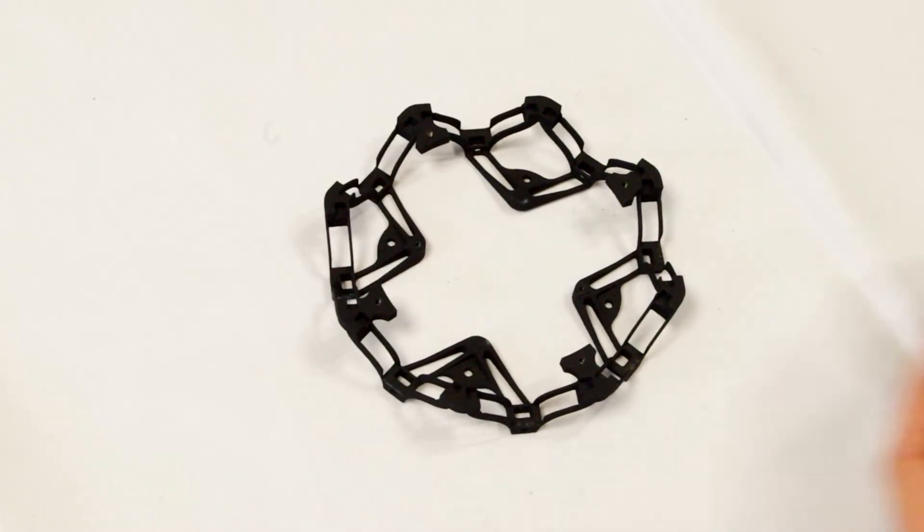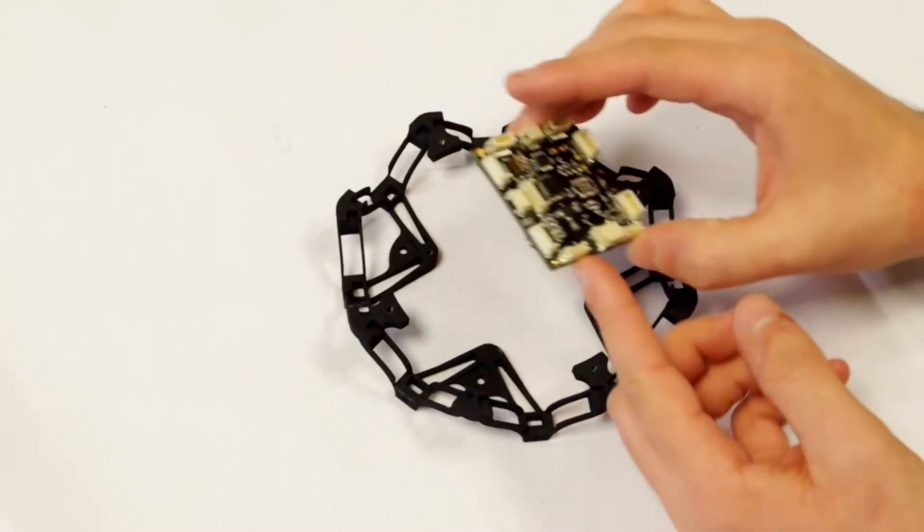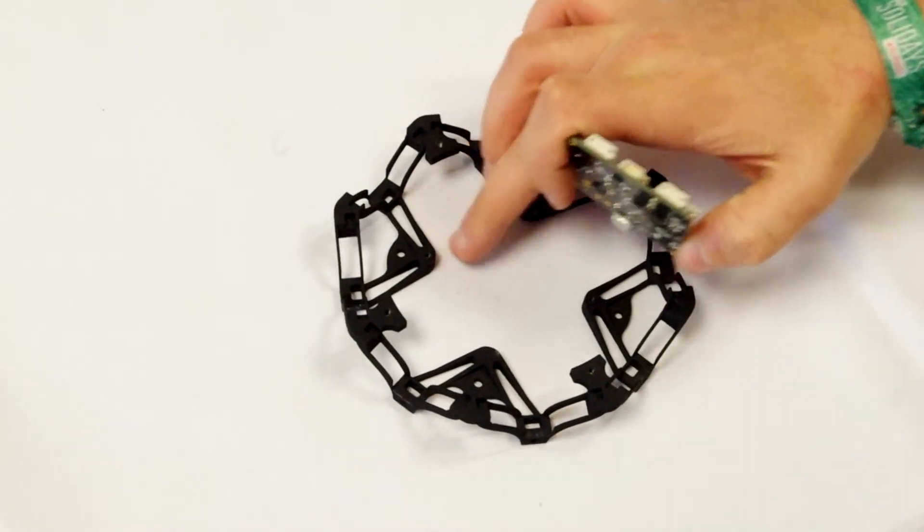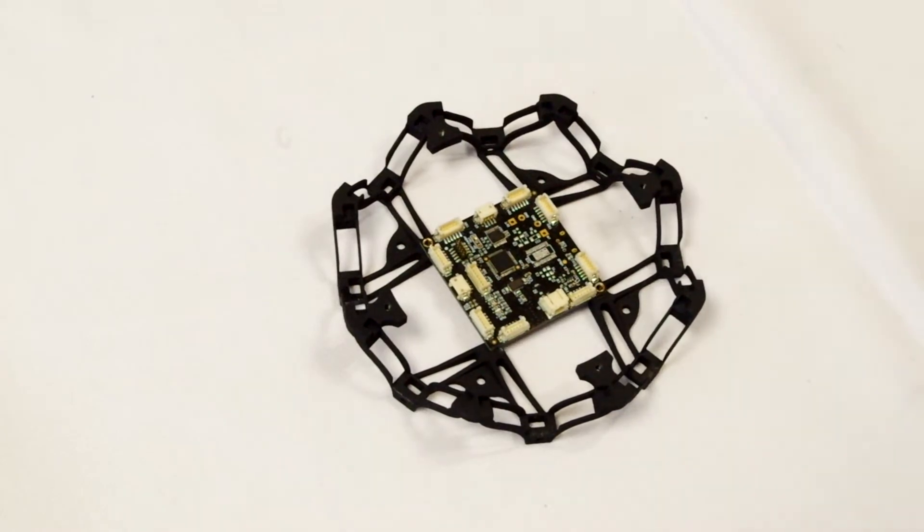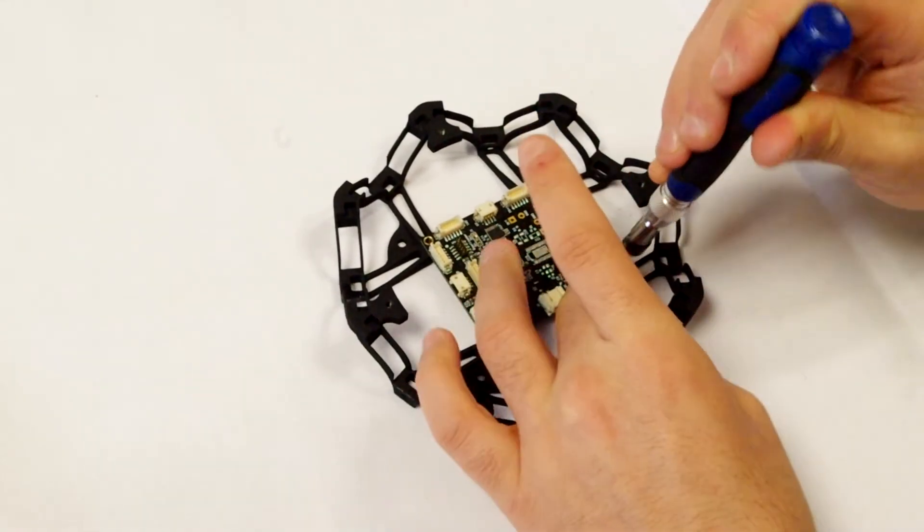Position the TeraRanger hub in the middle of the black frame. The four corners of the hub should be touching the black frame on those four spots. You can fix the TeraRanger hub with the two M2.5 screws.